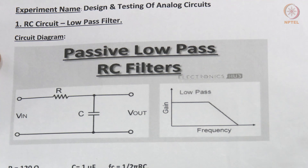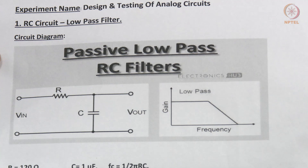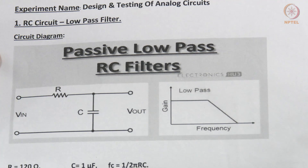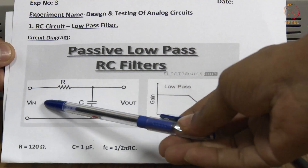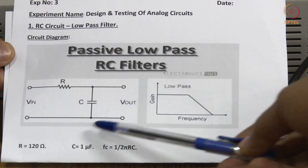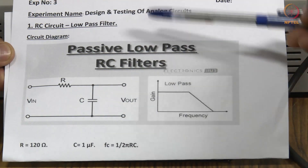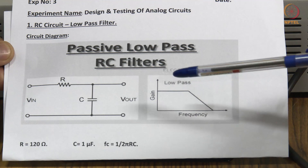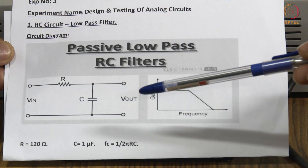Presently, what we are showing is the low pass filter circuit using RC components. RC means one value will be the resistance and one value will be the capacitance. Our RC circuit for the low pass filter will be like this. As per this circuit diagram, we are going to connect the same circuit into the breadboard and check what is the frequency response in the practical value.